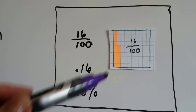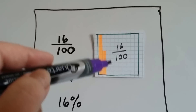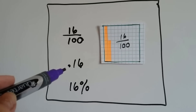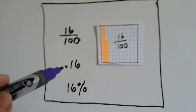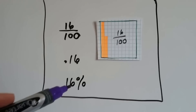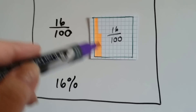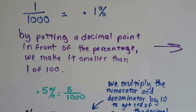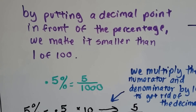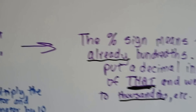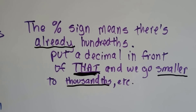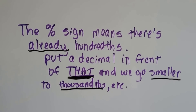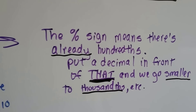This green square has got sixteen orange squares filled in — sixteen of the hundredths. That's the fraction sixteen over 100. It can also be written as point one-six for sixteen hundredths as a decimal, or we can say it's sixteen percent filled in — sixteen of the hundred. By putting a decimal point in front of the percentage, we make it smaller than one of a hundred. The percentage sign means there's already hundredths; put a decimal in front of that and we go smaller to thousandths, ten-thousandths, hundred-thousandths.